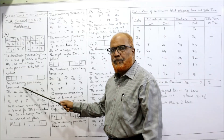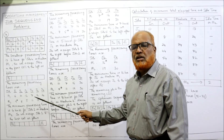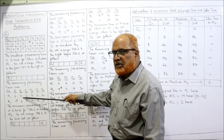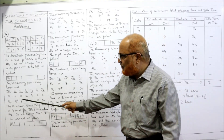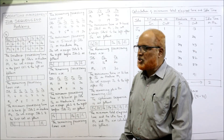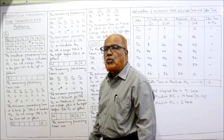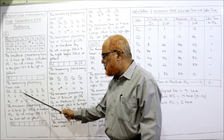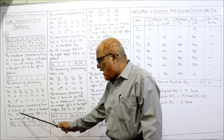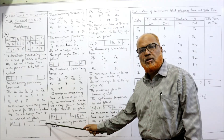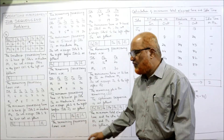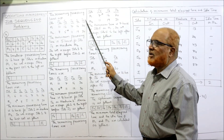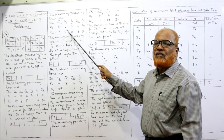Now exclude J4. The remaining jobs are J1, J2, J3, J5, J6, J7. From their processing times, four hours is the minimum — for job J1 on machine M2, the second machine — so we assign from the right. We place J1 in the last cell. Next, from the remaining jobs, five hours is the minimum, for job J3 on machine M2, so we assign J3 to the right, before J1.